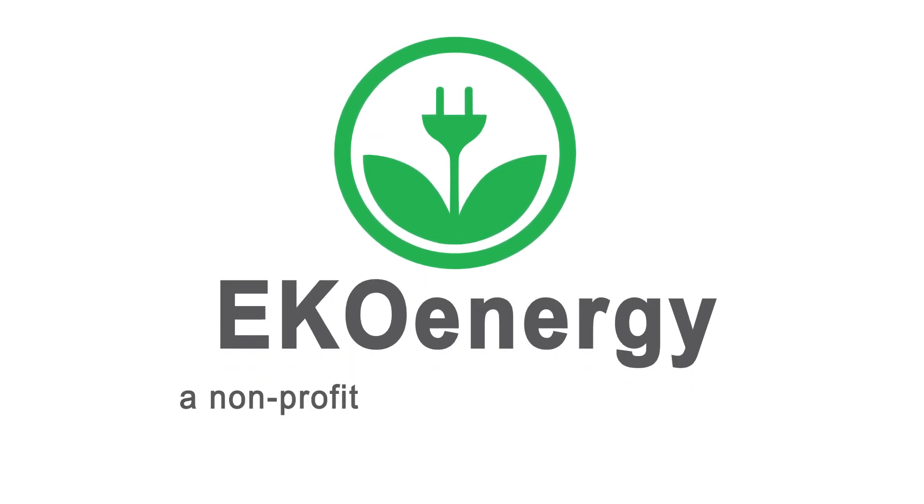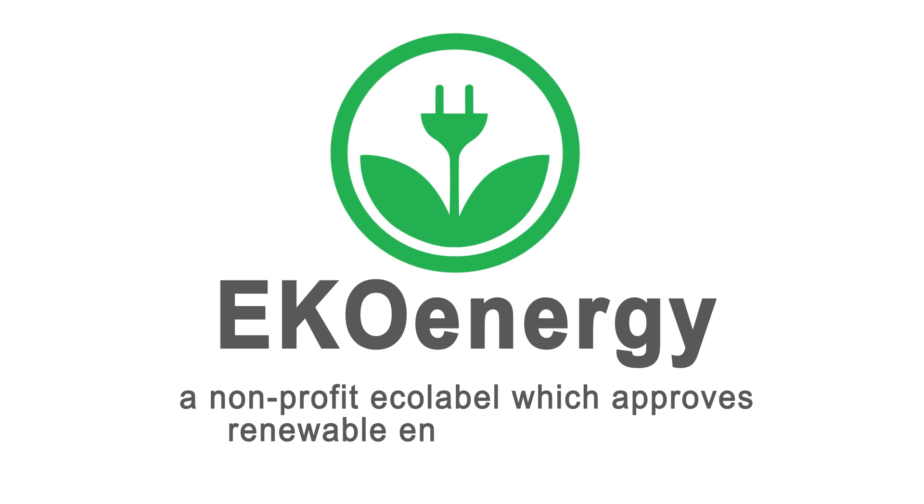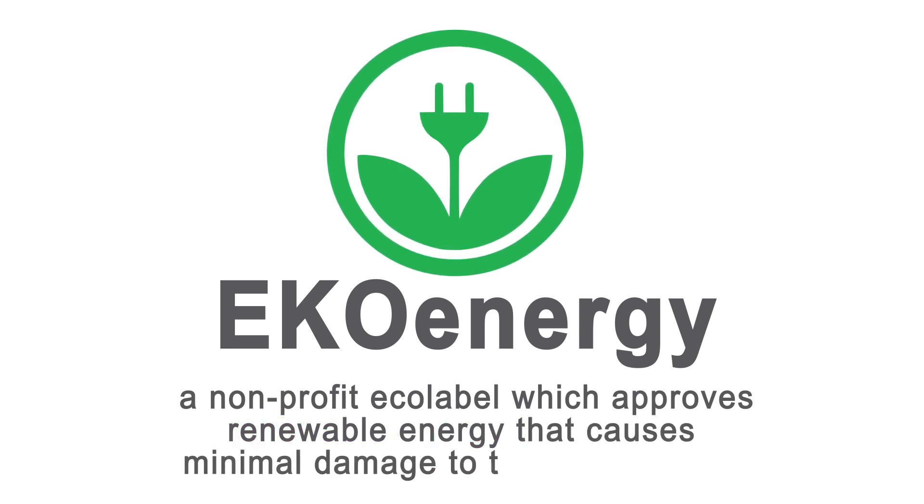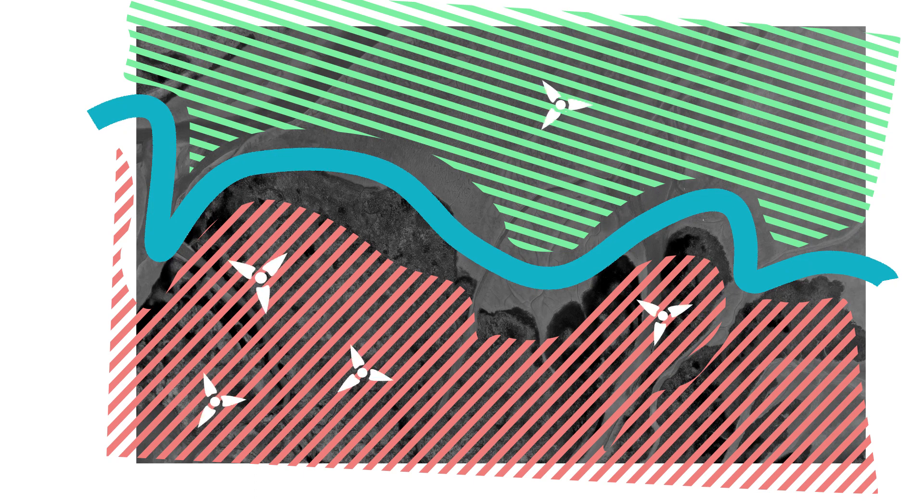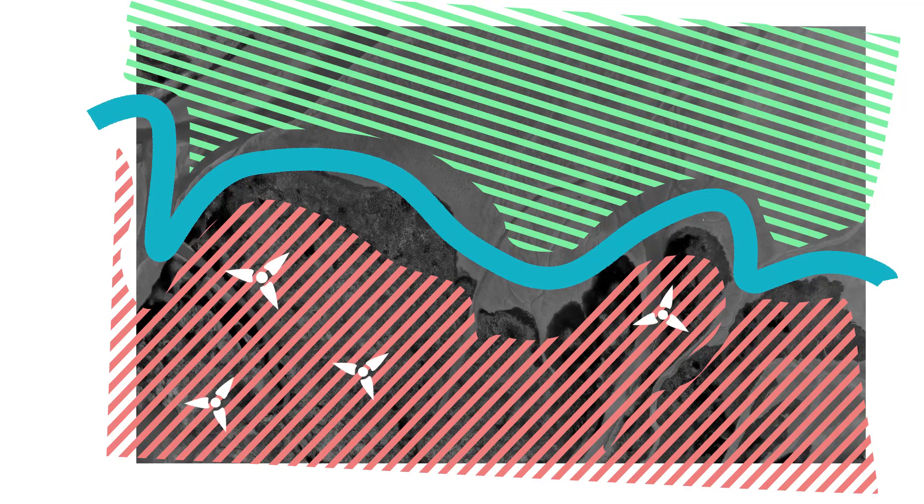EcoEnergy is a non-profit eco-label which only certifies renewable electricity that causes minimal damage to the environment. For example, EcoEnergy only approves wind farms situated outside of protected nature areas.